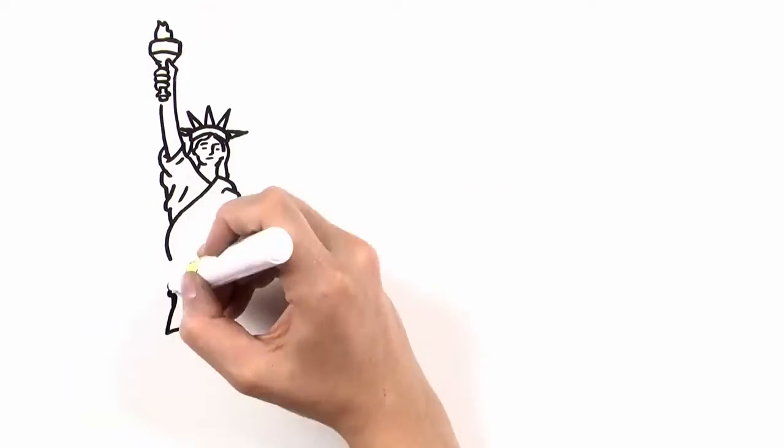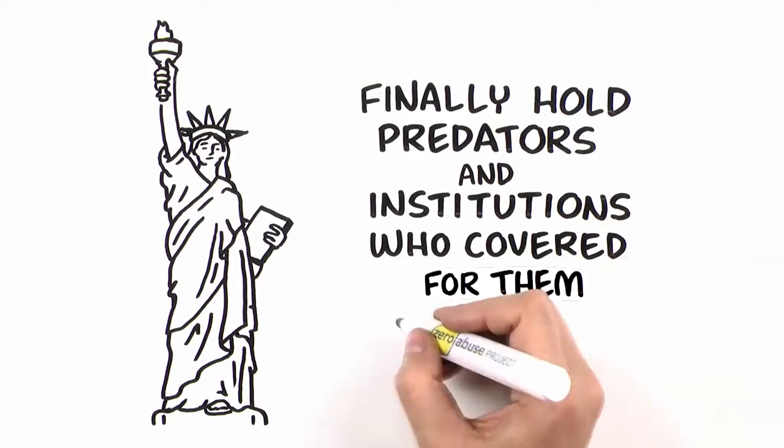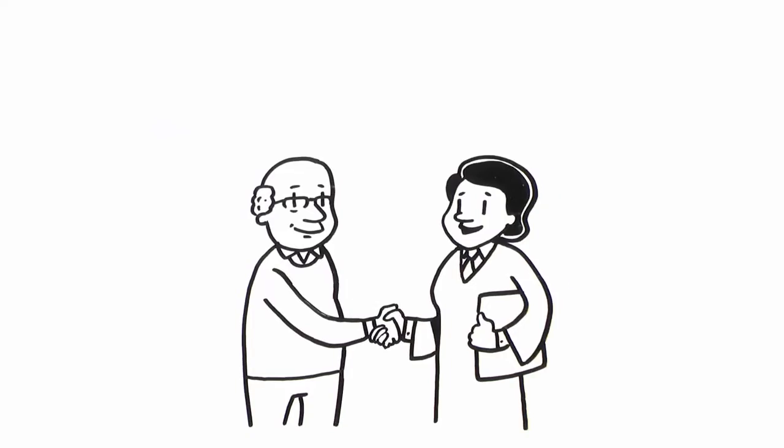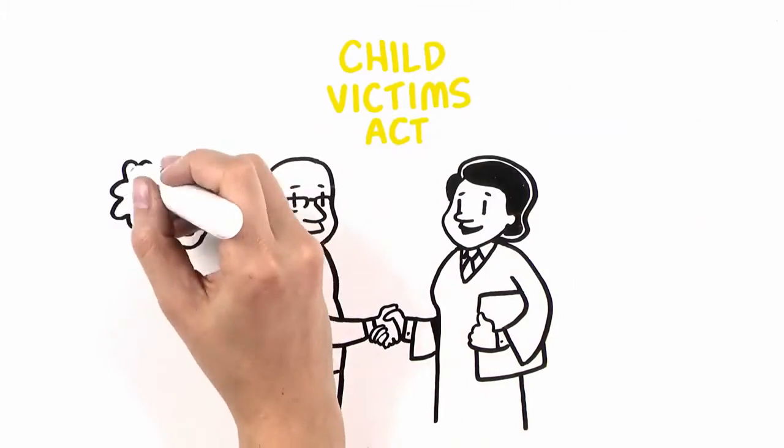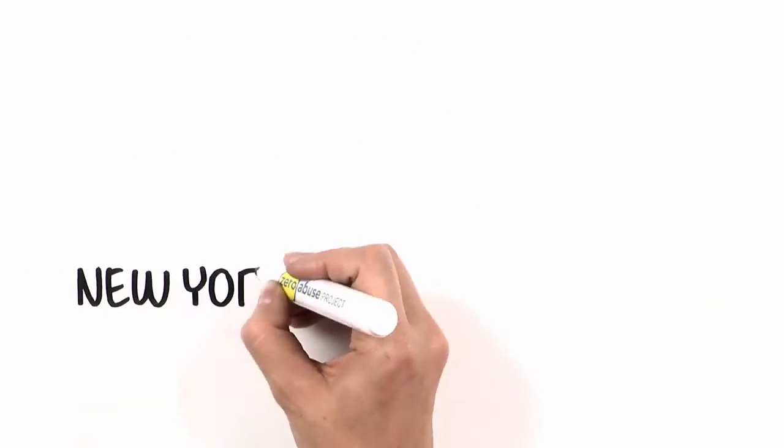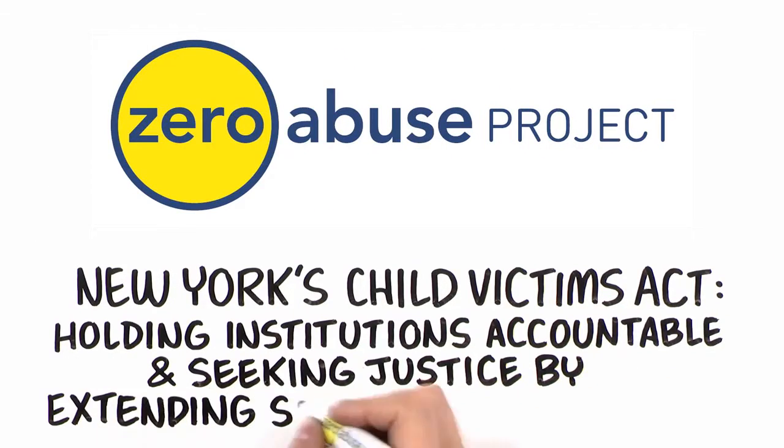Child sex abuse survivors in New York can finally hold predators and the institutions that covered for them accountable. If you were sexually abused as a child, the Child Victims Act will allow you to take action and find justice. Doing so only requires a few quick, easy steps to connect with an organization that can help.